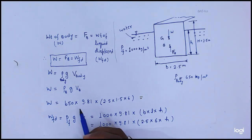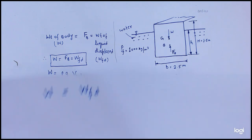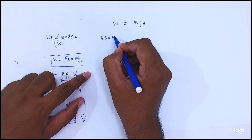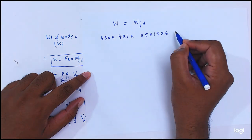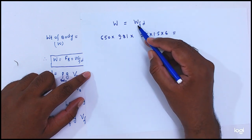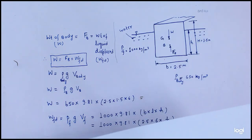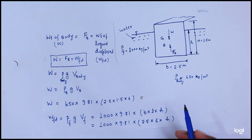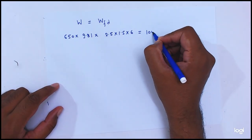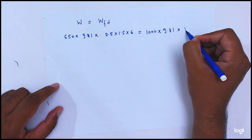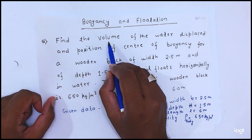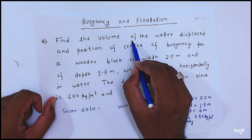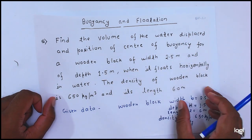From here we are able to calculate because we know that the weight of the body equals the weight of the fluid displaced. Weight of the body: 650 times 9.81 times 2.5 times 1.5 times 6. Weight of fluid displaced: 1000 times 9.81 times volume V_F. First we will calculate V_F, then we are able to find the height h and the volume of water displaced.